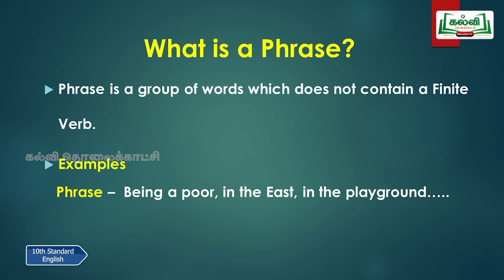I hope you understand what finite and non-finite verbs are. Now we will get into what a phrase is — that is our topic today. A phrase is a group of words which does not contain a finite verb. Already we learned about finite verbs. This phrase combines a group of words, but it would not contain a finite verb. A finite verb indicates the time of action and tense, but in phrase forms we would not get any finite verbs.